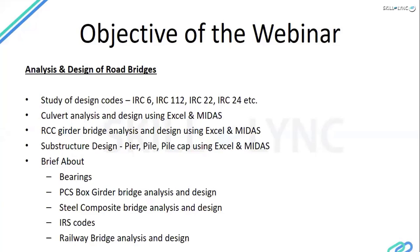We have pier caps, then piers, then foundations. Piers are nothing but pure columns. After that, we'll go deeper into bearings. Bearings are part of the substructure, connecting the superstructure and the substructure. Then later on we'll go into box girders — RCC box girders — which are in the pre-stressed concrete field mainly.